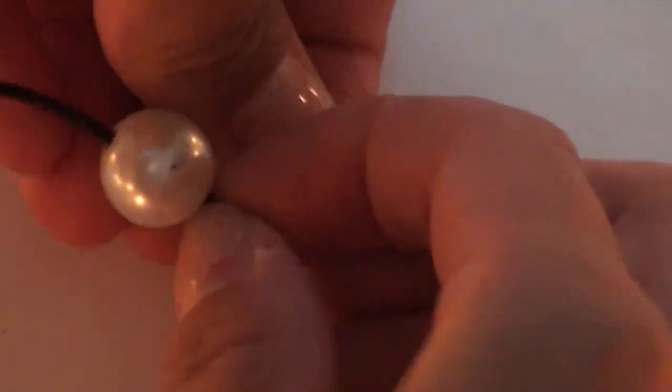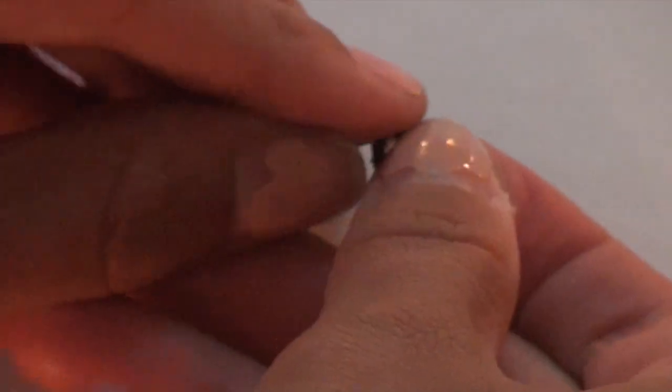In order to secure the end, make two knots around the pearl near the end of the cord.